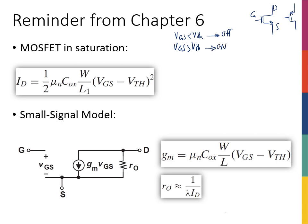If VGS is greater than VTH then my transistor is on, then I have to decide if this is in saturation or triode. If VDS was greater than VGS minus VTH, which we called the overdrive voltage, then we called this transistor in saturation.